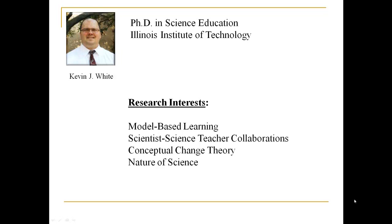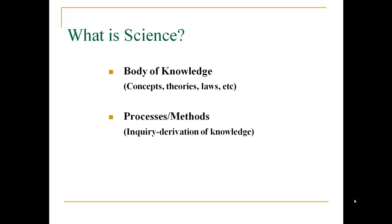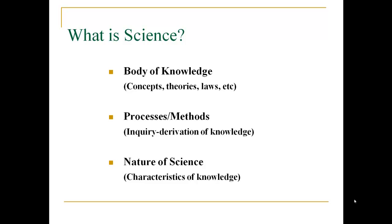Let's start by asking: what is science? Well, we know it's a body of knowledge — it's the concepts, theories, and laws that make up that body. There's also processes and methods, the ways in which we go about obtaining that body of knowledge. And then finally, there's nature of science — the characteristics of the knowledge, mostly the knowledge that comes about by the fact that we're human beings. There are certain implications and characteristics of the knowledge that we obtain.